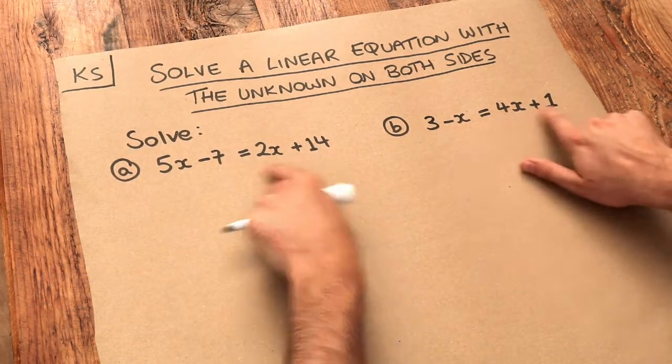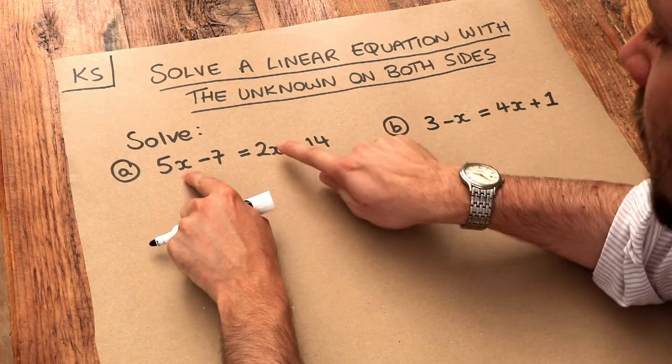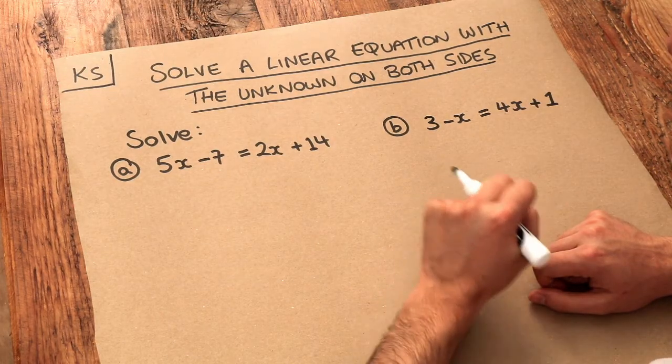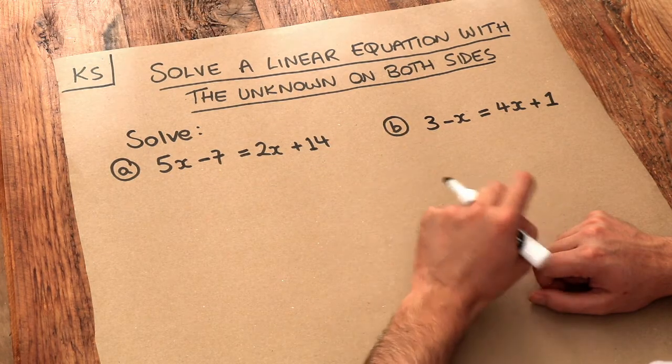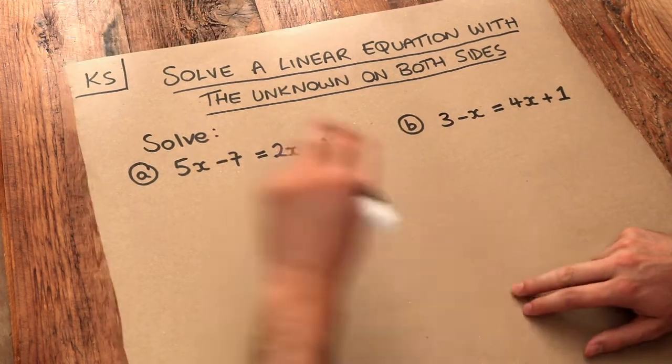So we've got two equations here and in both these equations the unknown, the X, appears on both sides of the equation and this makes it a bit more difficult than when we had the unknown on just one side of the equation. However, we only have one extra step that we need to do and it's this.